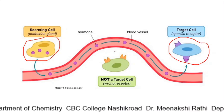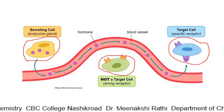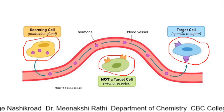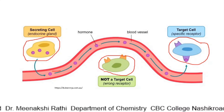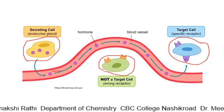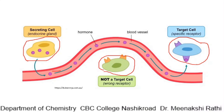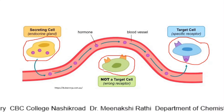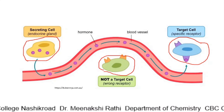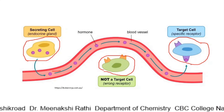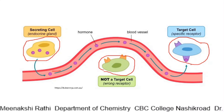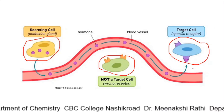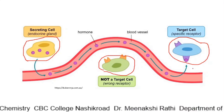Through the blood vessel, hormones travel towards the target cell or specific receptor. Hormones do not go towards wrong receptors — they go towards the proper receptor where they can perform their function. Hormones are secreted at one place and perform their function at another place.